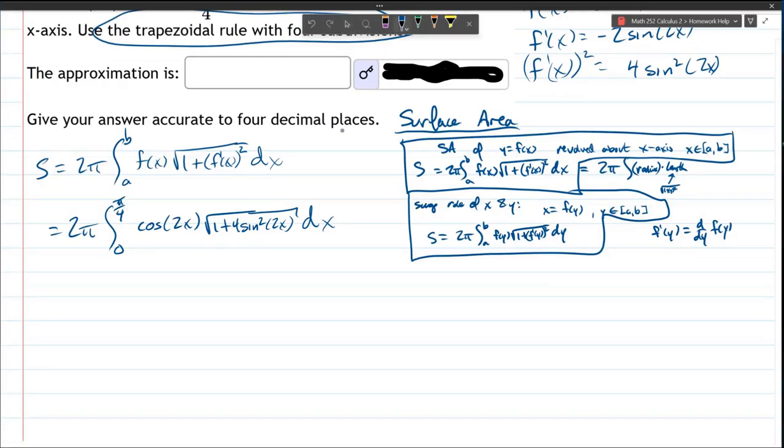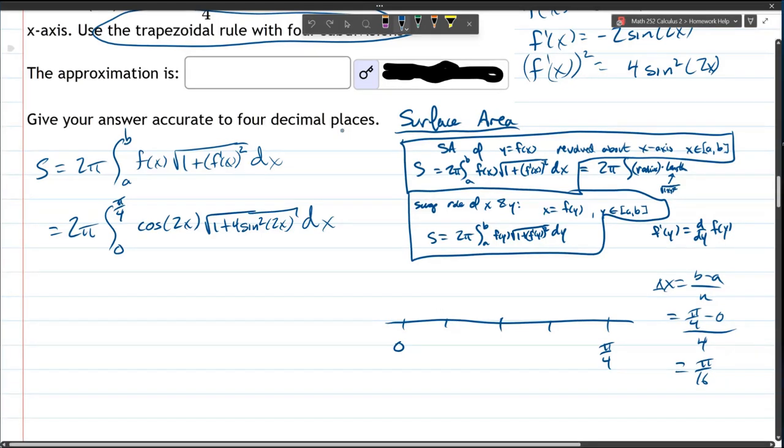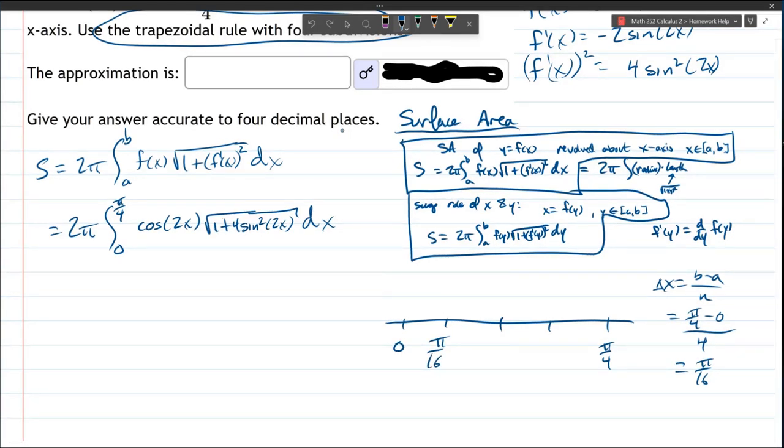So whenever I do these, I like to draw out the interval on a number line. We're going 0 to π over 4. We're going to split it into 4 pieces. Now what's the first one? So we'll do our delta x is b minus a over n. So it's π over 4 minus 0 over 4, which is π over 16. So first distance is π over 16. Luckily, we're starting at 0, so 0 plus π over 16 is π over 16.